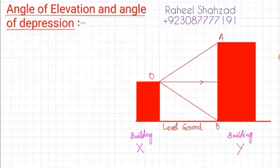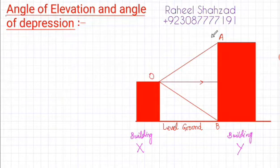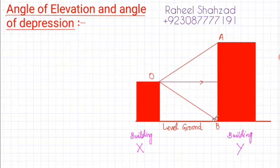This is a very important part in O levels or IGCSE trigonometry. Let's assume that these are two buildings. Suppose this is building X and here we have building Y. This is the point of observation, that is the top of building X. From this point you can observe the top of building Y, and from this point you can also observe the bottom of building Y.